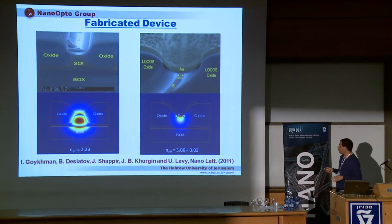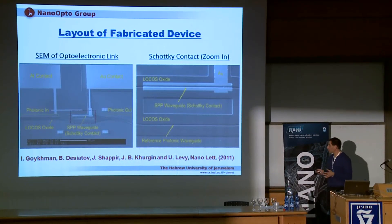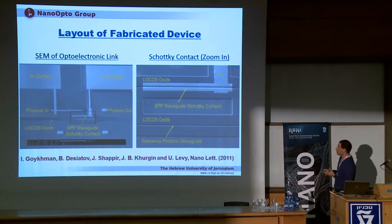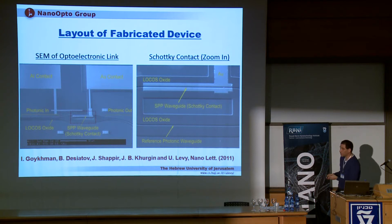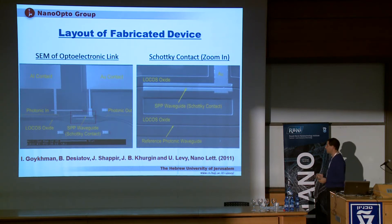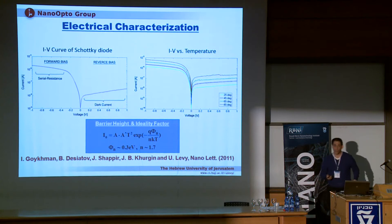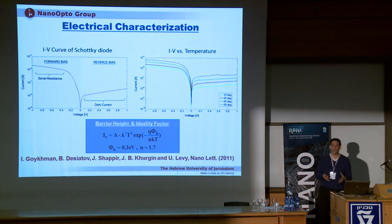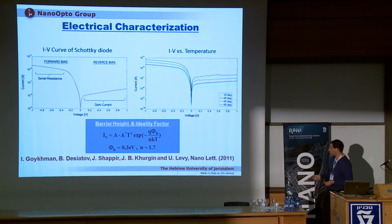Here you can see a top-view layout of our device with the aluminum ohmic contact and the gold Schottky contact. The signal was split into the detector arm and a reference arm, which was used to know exactly how much light we had inside our device. The electrical measurements show an IV diagram under different temperatures, from which we can extract the parameters of the diode — ideality factor and Schottky barrier. We ended up with a Schottky barrier of about 0.3 eV and an ideality factor of about 1.7.